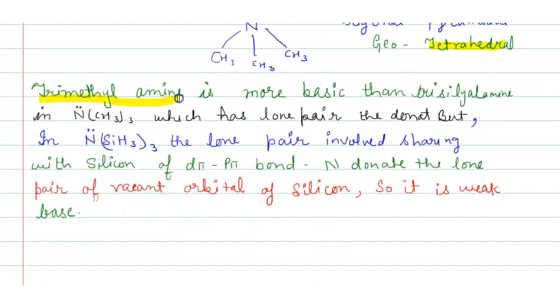Trimethylamine is more basic than trisilylamine. In trimethylamine, the lone pair is available to donate, but in trisilylamine the lone pair is involved in sharing with silicon through d(pi)-p(pi) bonding. Nitrogen donates the lone pair to vacant orbital of silicon, so it is a weak base. Thank you.